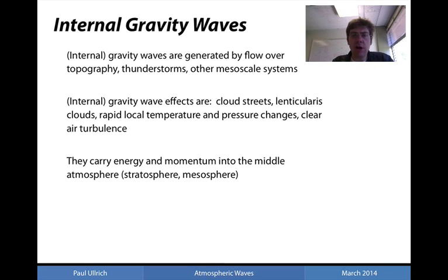Internal gravity waves are on a much finer scale than the Rossby waves that we discussed in the previous lecture. In fact, these can be found generally on the mesoscale, generally in response to either flow over topography, thunderstorms, or other mesoscale systems. The most prominent visual effects that arise due to internal gravity waves are cloud streaks and lenticular clouds.